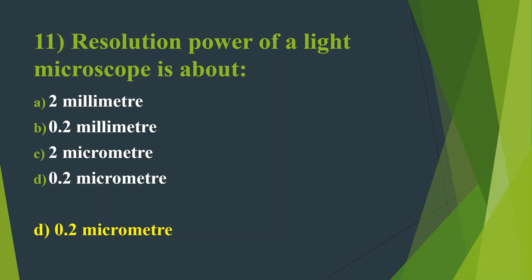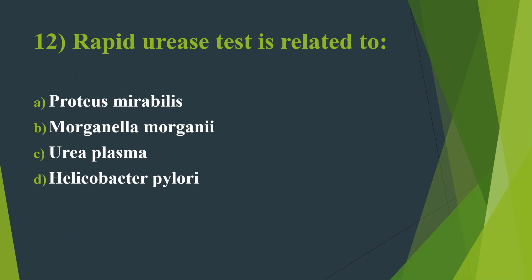Twelfth question: Rapid urease test is related to — Option A: Proteus mirabilis. Option B: Morganella morganii. Option C: Ureaplasma. Option D: Helicobacter pylori. Here the answer is Option D, Helicobacter pylori. It hydrolyzes urea into ammonia and water within 1 to 3 hours, so it is known as the rapid urease test.